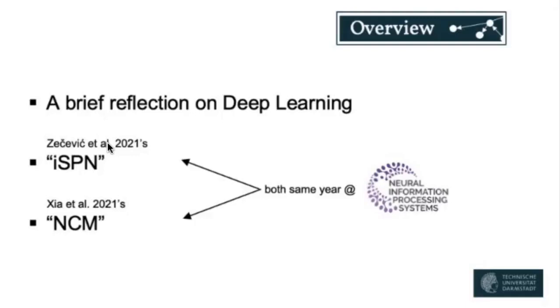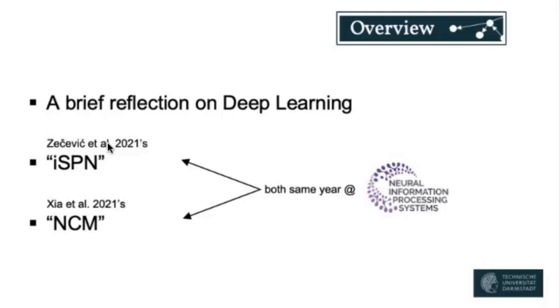It might be a bit shorter than usual, so we're going to use some more time to dwell over each of these aspects in more detail and in a more interactive way. If not, then it's just an earlier Friday. So, a brief reflection on deep learning — how did we get here? And how did we get to this craze that we're experiencing currently, but really over the whole past 10 years?